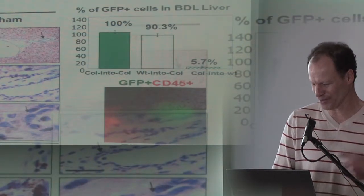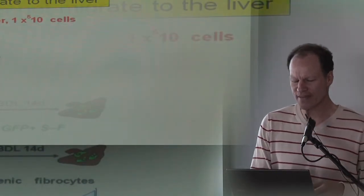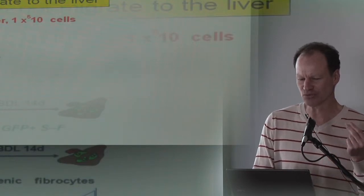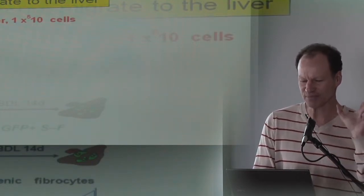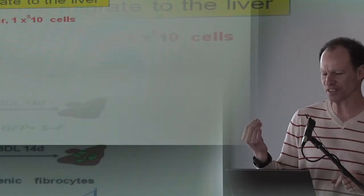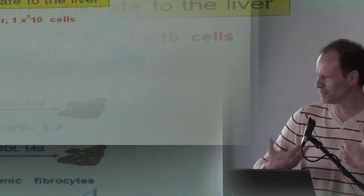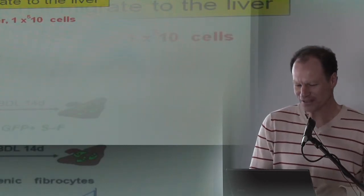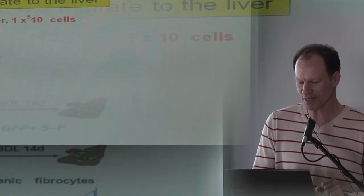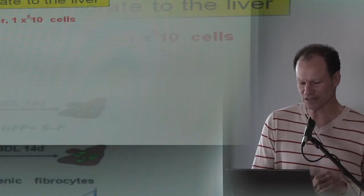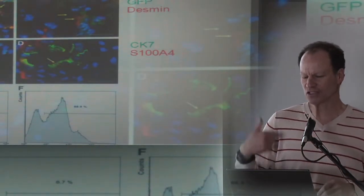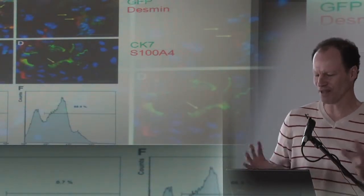We did another type of experiment where we adoptively transferred the fibrocytes. The fibrocytes, just as the literature said, home to the injured liver. While we gave these hepatic stellate cells, if we injected them, they ended up in the lungs. So fibrocytes do home, but they only represent 5% of the myofibroblast population. Stellate cells are incapable of homing to the injury.